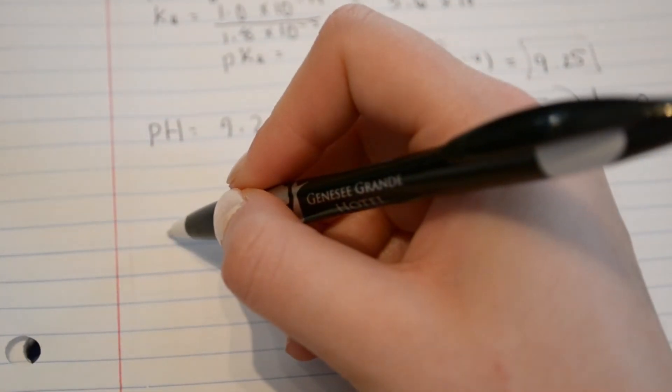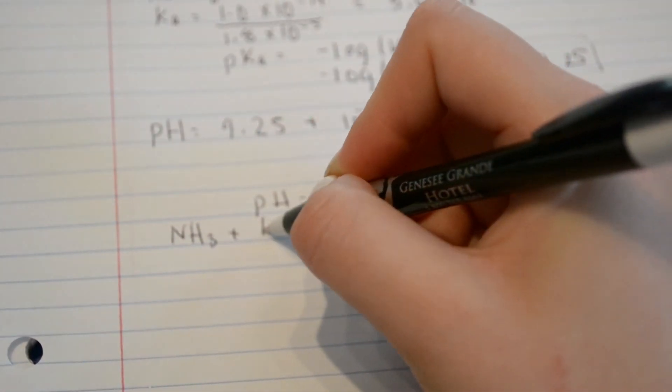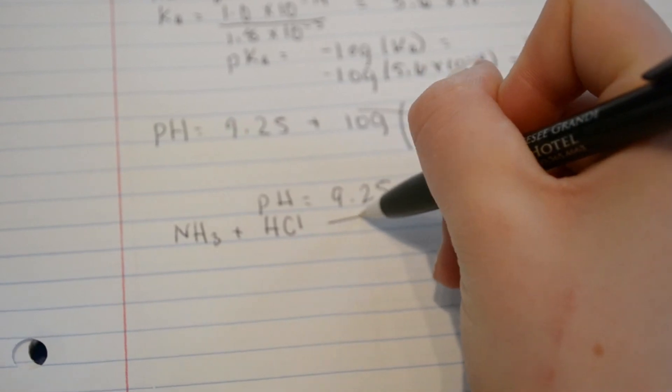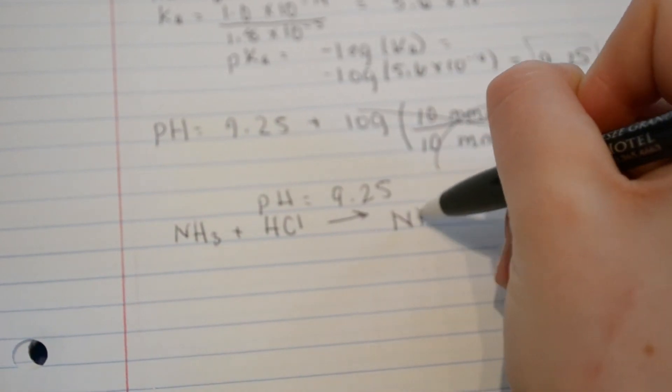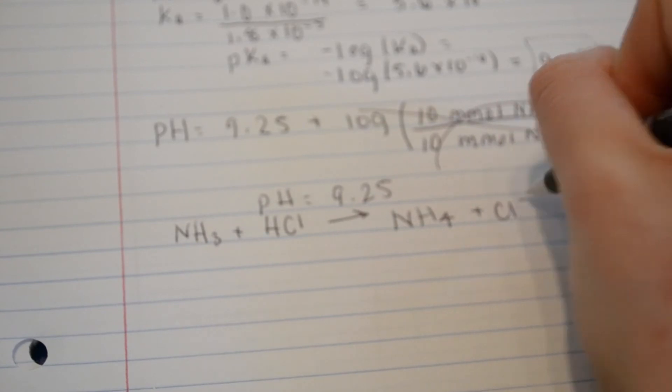Now to find the pH at the end, we'll set up an ICE table. So we'll start with NH3 plus the strong acid, HCl, which goes to NH4 plus Cl minus.